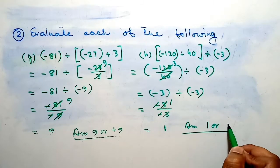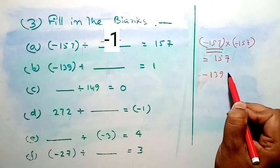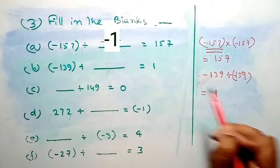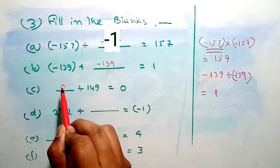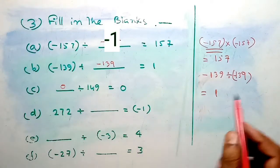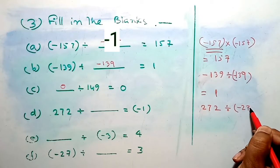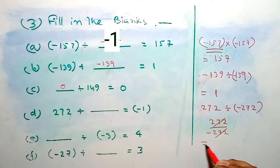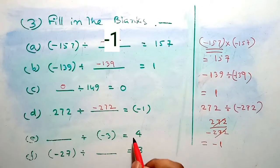Minus 3 divided by minus 3 — minus and minus cancel, 3 ones are 3 — therefore our answer is 1, or positive 1. When we divide minus 139 by 139, our answer will be minus 1. And when we put 0, the answer will be 0. Minus 272 divided by minus 272: our answer will be 1.